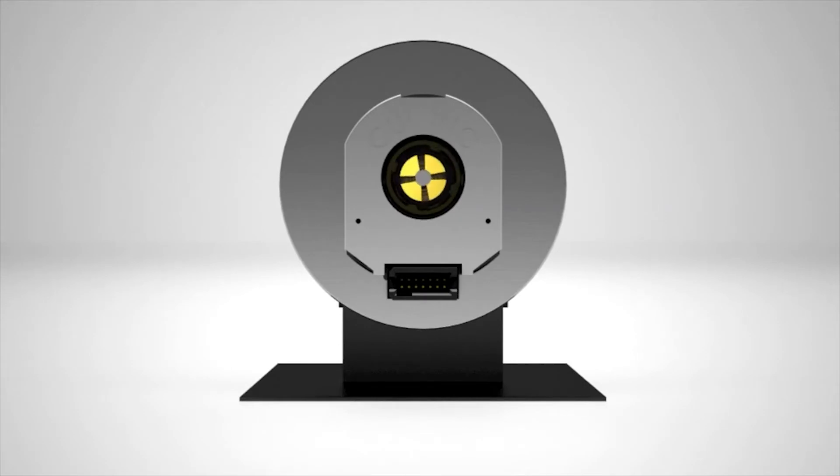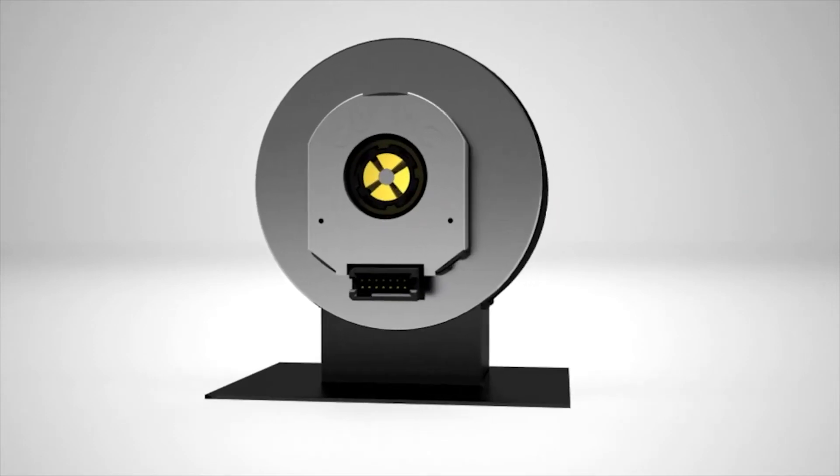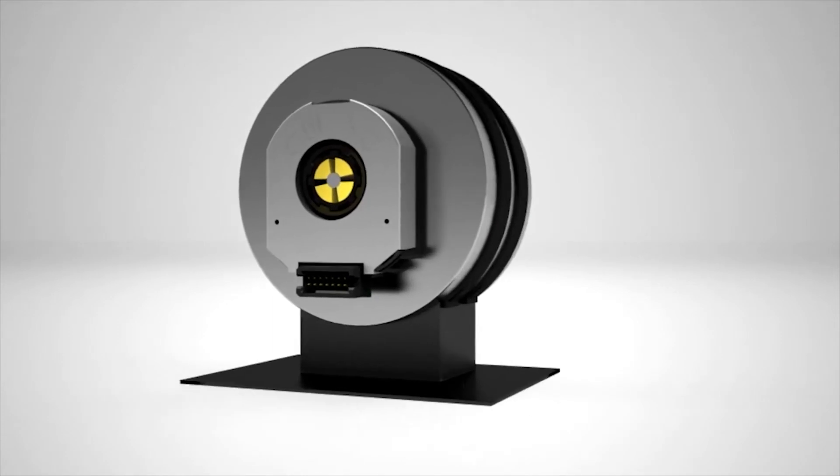The good thing about the mounting process is that there are no tight tolerances involved in positioning any of the parts. The encoder kit includes a fixture that you use to get the shaft adapter at the right distance from the motor housing. The encoder housing just snaps onto the mounting frame, and that's pretty much all there is to it.